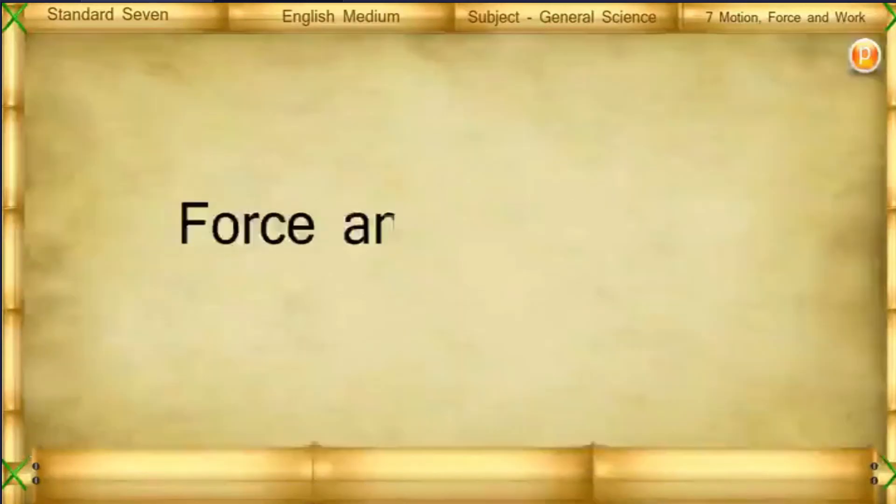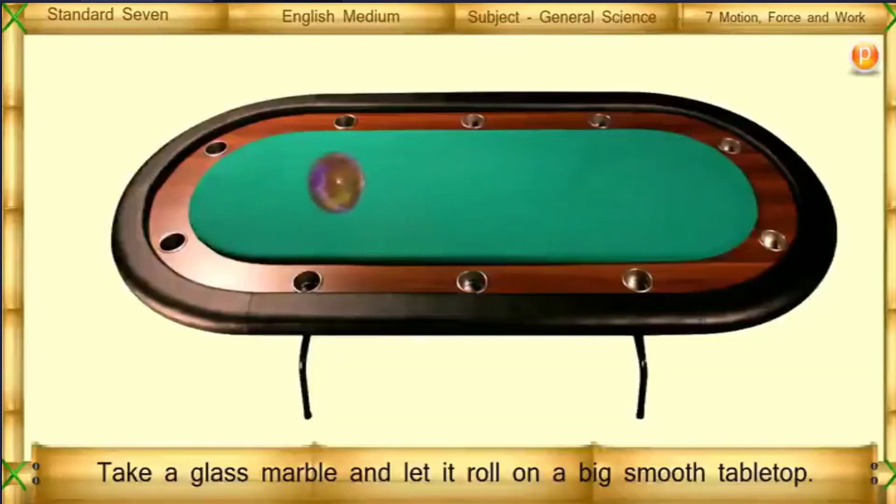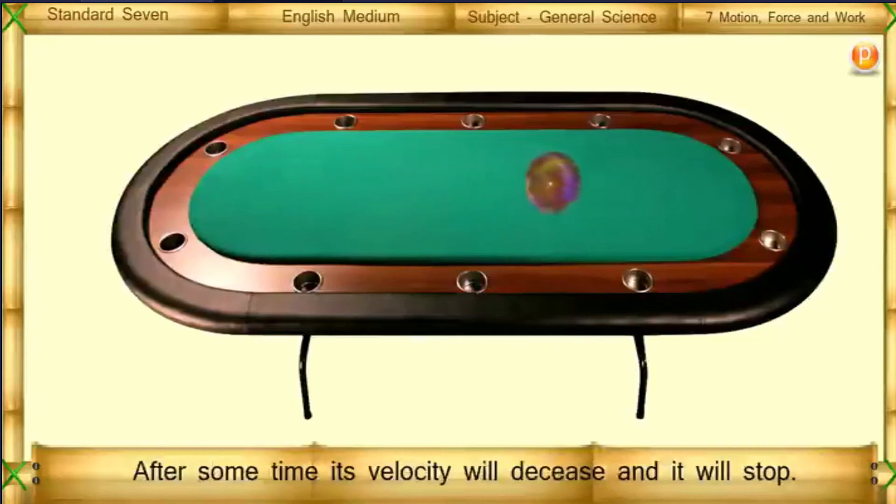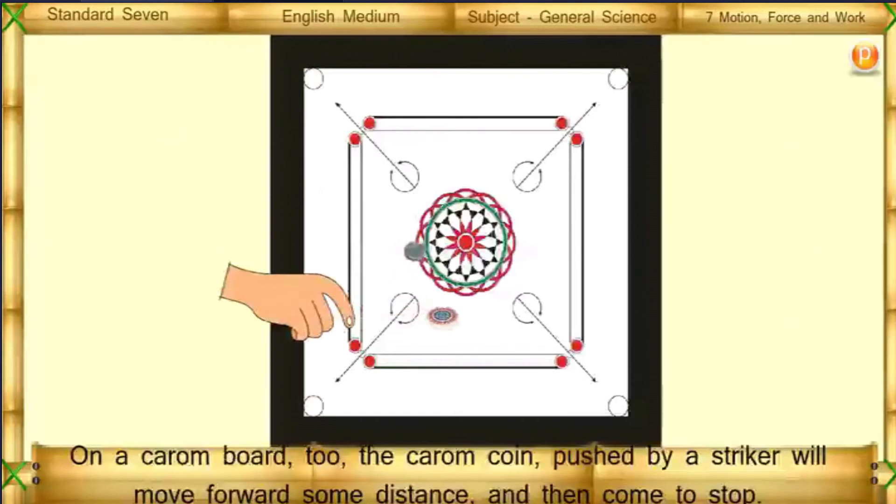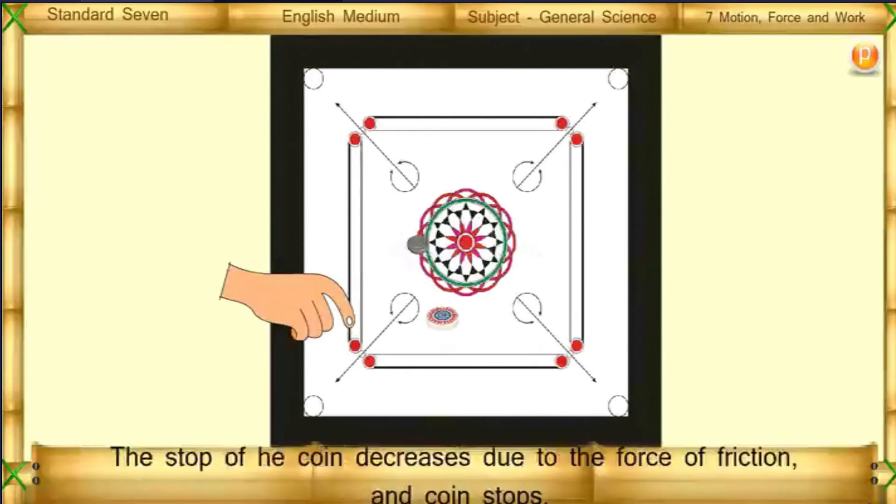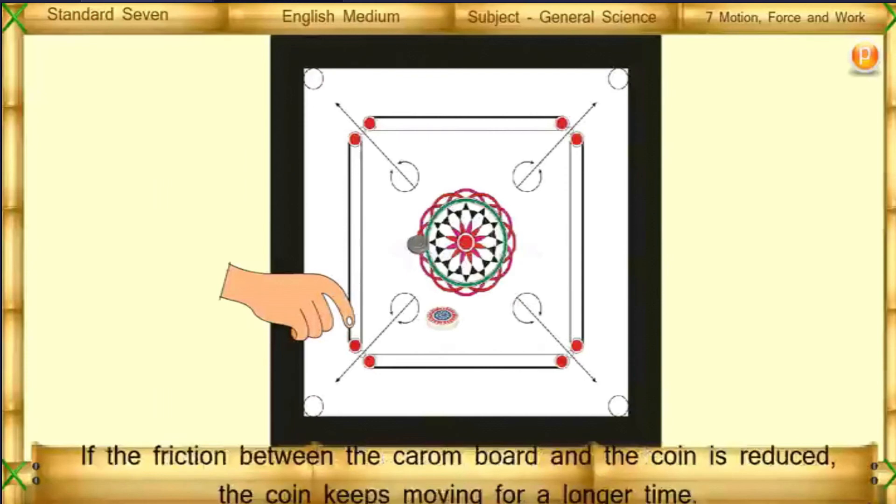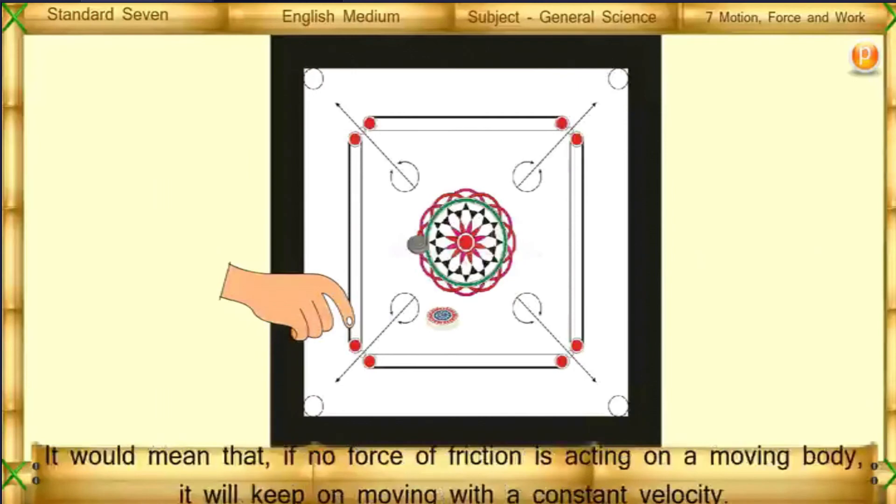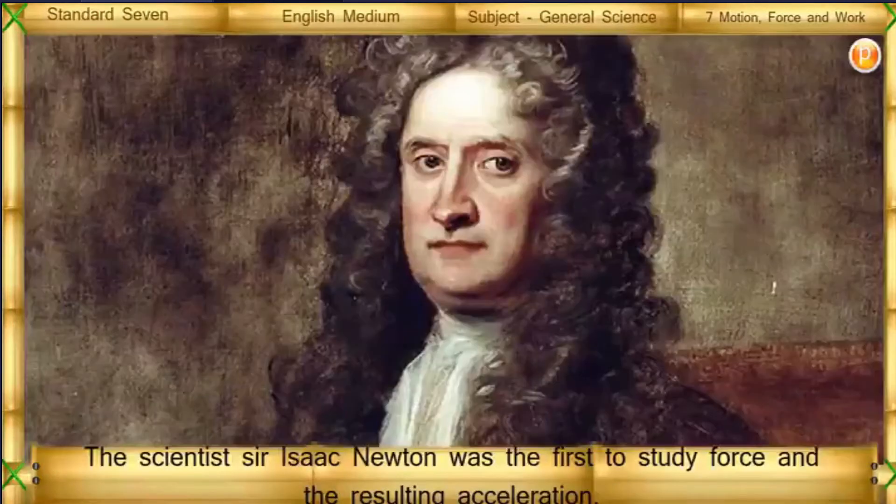Force acts on a body. Force and Acceleration. Take a glass marble and let it roll on a big smooth table top. After some time its velocity will decrease and it will stop. On a carom board too, the carom coin pushed by the striker will move forward some distance and then come to stop. If the coin is pushed after applying talcum powder to a carom board, it will keep moving for a longer time and then come to a stop. The speed of the coin decreases due to the force of friction and the coin stops. If the friction between the carom board and the coin is reduced, the coin keeps moving for a longer time. It would mean that if no force of friction is acting on a moving body, it will keep on moving with a constant velocity. The scientist Sir Isaac Newton was the first to study force and resulting acceleration.